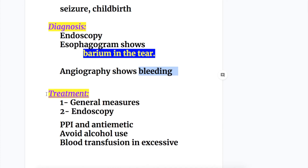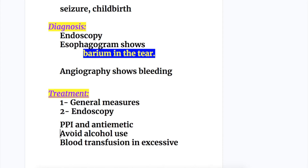The treatment of Mallory-Weiss syndrome — other than general measures — endoscopy is the method of choice. Other treatments include proton pump inhibitors and antiemetics. Avoid alcohol use, and blood transfusion may be needed in excessive bleeding as occurs in submucosal tears involving an arteriole.